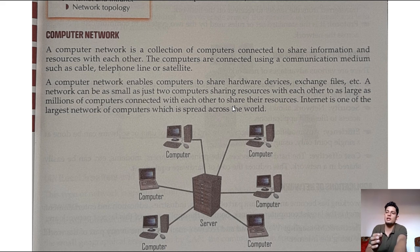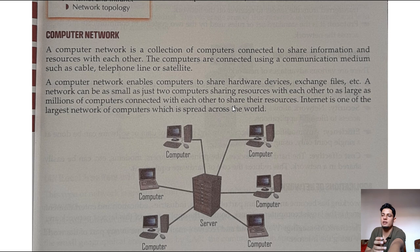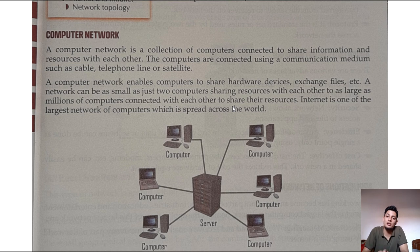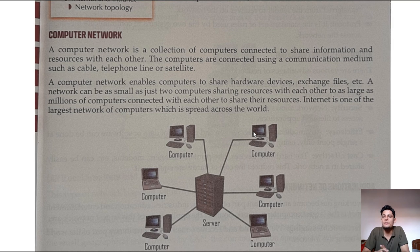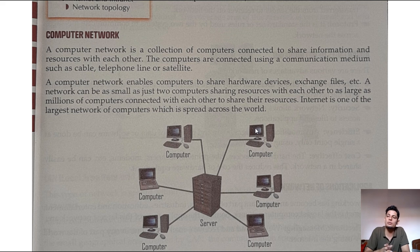A computer network is a collection of computers connected to share information and resources with each other. Computers are connected using communication channels such as cables, telephone lines, or satellites. We can connect computers using LAN, MAN, WAN, wireless connections, Ethernet ports, RJ45 cables, Cat5e, and Cat6 cables. A network can be as small as just two computers sharing resources, or as large as millions of computers — the internet is one of the largest computer networks in the world.